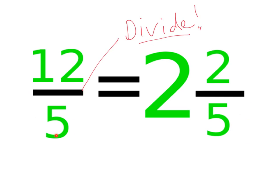Again, all we do is 12 divided by 5—that gives us 2 remainder 2—so it's 2 and 2 fifths, and that'll work the same way with any set of numbers.